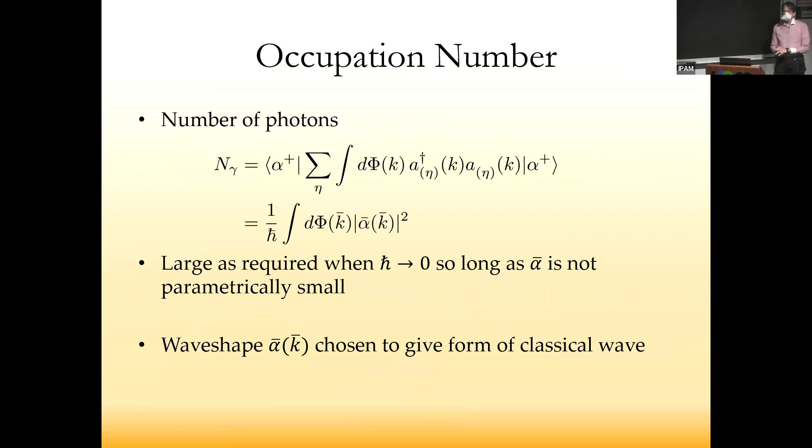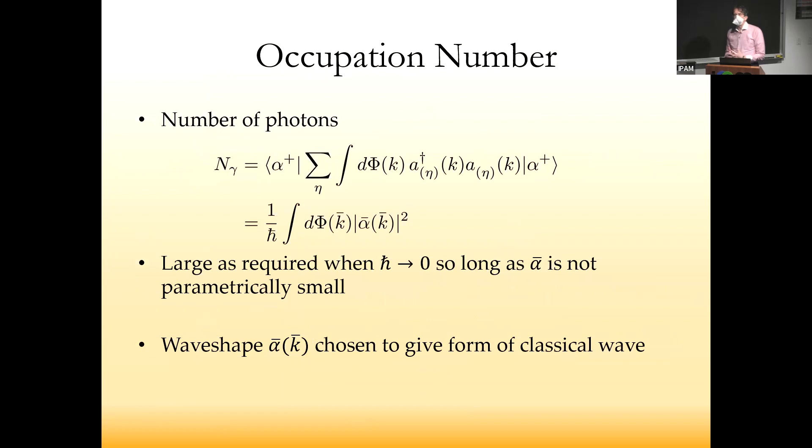We can compute the number of photons. That has to be large when we go to the classical limit to get factorization of correlation functions. That will be the case so long as alpha bar doesn't become parametrically small as ℏ goes to zero. You'll have some quantity multiplied by one over ℏ. As ℏ goes to zero, the number of photons or gravitons becomes large, which corresponds to a classical wave. This function alpha bar can be chosen to give you the correct form of classical wave or to make further approximations like geometrical optics.